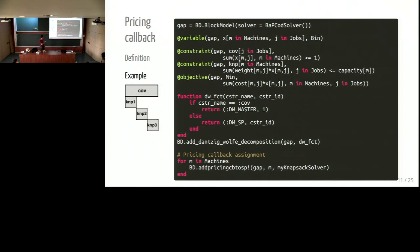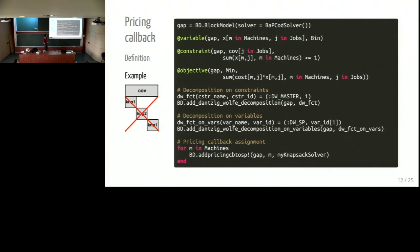The pricing callback takes one argument, CB, which is an Oracle data. First, we retrieve the index of the machine to know which problem we are solving. Then we retrieve the current cost of variables, solve the knapsack problem, and set the values in the pricing solution. We keep the block model, the JuMP model, the annotation function, and we assign the pricing callback to each subproblem. Since the pricing callback is solving a knapsack problem, the knapsack constraints are duplicated — implicit in the pricing callback and explicit in the JuMP model — so we can remove one of them. If we remove the constraints from the JuMP model, block decomposition cannot guess the membership of variables anymore, so we must define an annotation function for variables. The variable x_AM will go in the subproblem with ID M, giving us the same decomposition as before but without the explicit subproblem constraints.